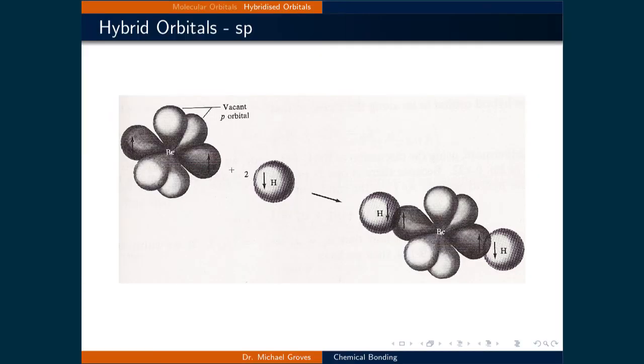Here is another illustration of what the SP hybridized orbital looks like. Using BEH2 as an example, the SP hybridized orbital is shaded darker and interacts with the two H atoms to form the molecule where each hybridized orbital points 180 degrees from each other.